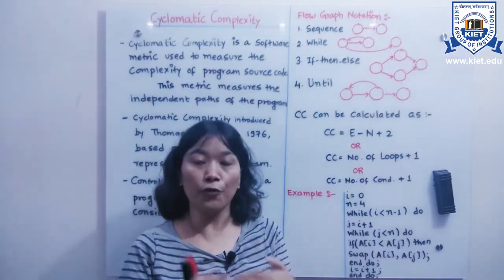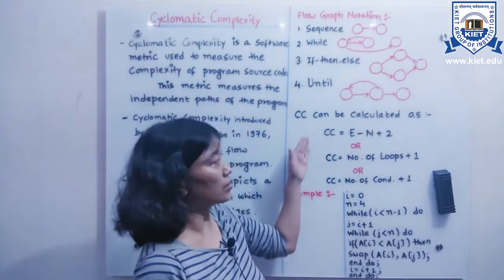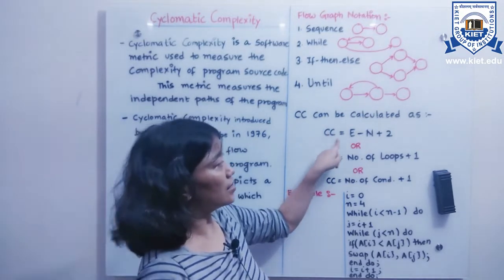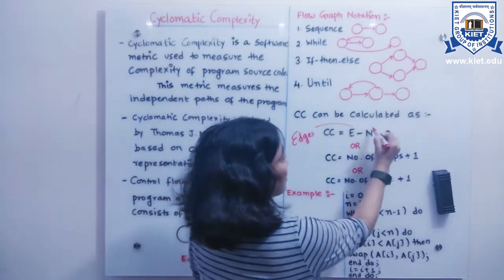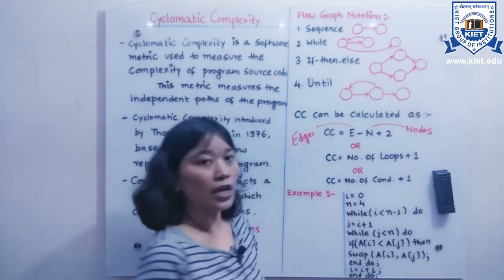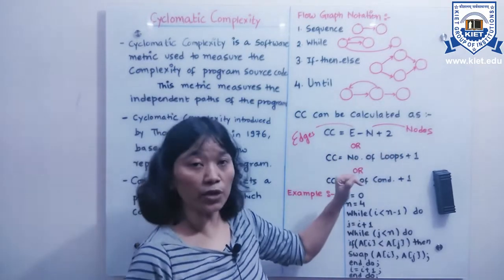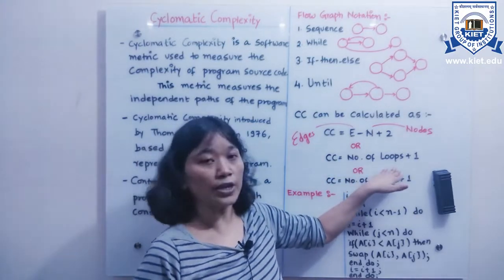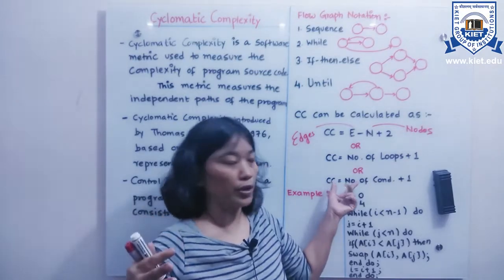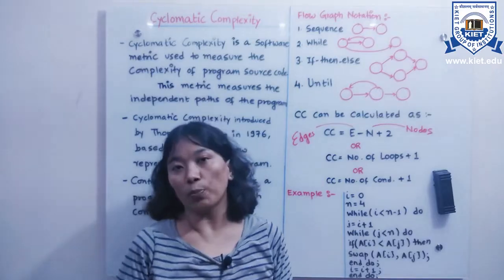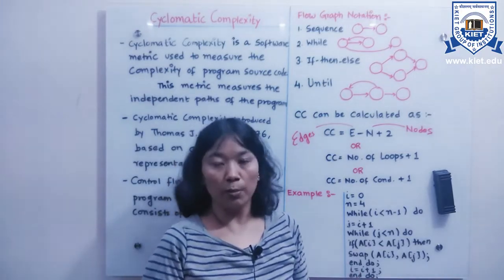Cyclomatic complexity can be calculated using the formula: CC = E − N + 2, where E stands for edges and N stands for nodes. A node generally has no more than two connections, which is why we use E − N + 2. Another way is to calculate the number of loops in the program plus one. Similarly, we can count the number of control conditions in the program plus one. All three formulas should give the same answer.